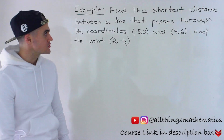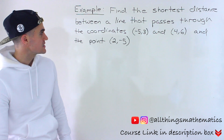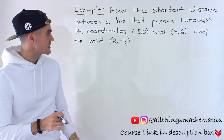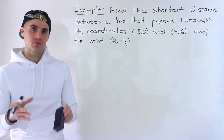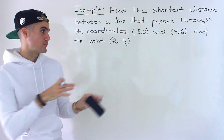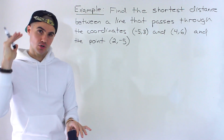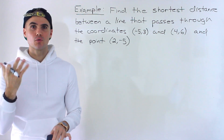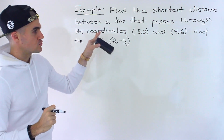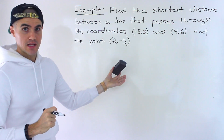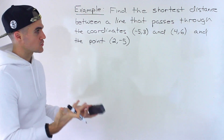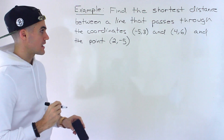Welcome back everyone, Patrick here. Moving on to the next question, we have to find the shortest distance between a line that passes through the two points negative 5, 3 and 4, 6, and the point 2, negative 5. This is another example dealing with the shortest distance from a point to a line. I'm assuming you've gone through the other examples in order. In the overview video, I went through general steps, which we're going to follow, and there's also a formula I've introduced in previous examples that we'll use at the end to verify our answer.